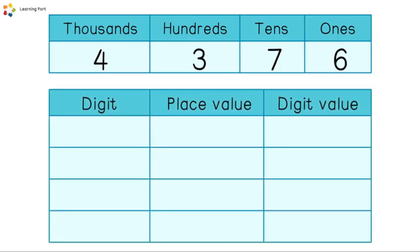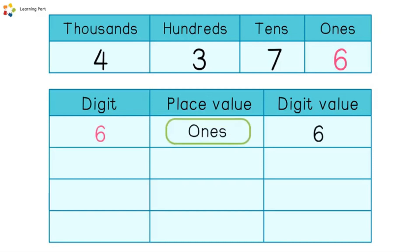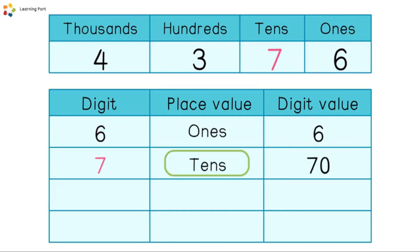Each digit in the number has a place value and a digit value. Digit six: place value is ones, and digit value is six. Digit seven: place value is tens, and digit value is seventy.